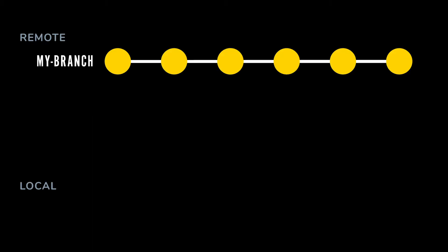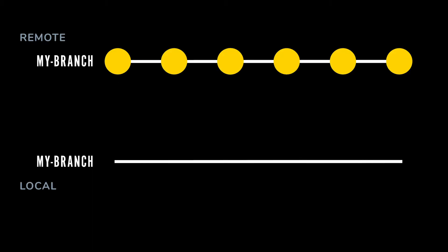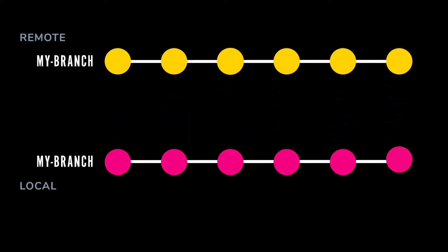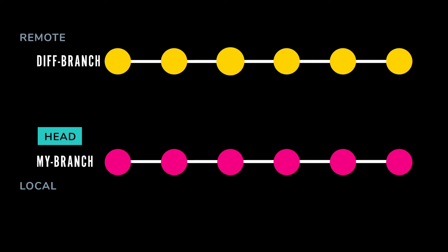This will create a new branch on your machine with the same name, download the code from the remote repository, and then move you to the new branch on your machine. Technically, you could set up tracking for a branch on your local machine to point to a branch with a different name on the remote repository, but I wouldn't recommend it.